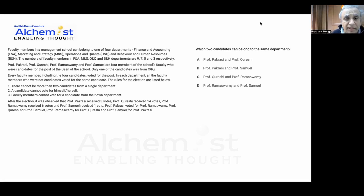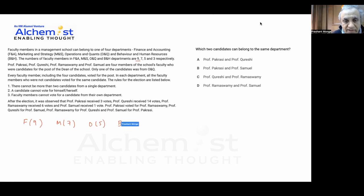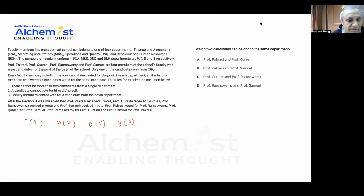In this question we are given four departments of a management school: Finance which has nine members, Marketing which has seven faculty members, Operations which has five, and Behavior and HR which has three members. Some of these members are standing for the post of dean. In all we know there are 24 faculty members, and there will be four candidates whose names are given as P, Q, R, and S.